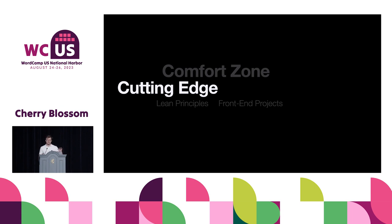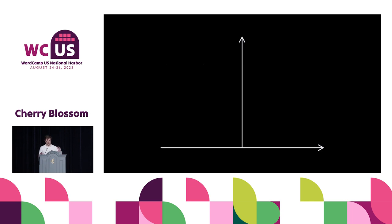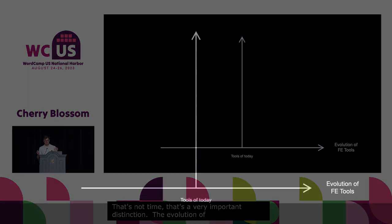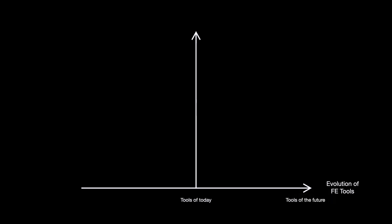Why I think it's important to stay on the cutting edge — that's another topic we'll be discussing today. I want to illustrate it with this simple graph. On the x-axis, we have the evolution of front-end tools — not time, that's a very important distinction. At zero we have tools of today, on the right tools of the future, on the left tools of the past. On the y-axis, we have challenges associated with working with tools of those moments in time.